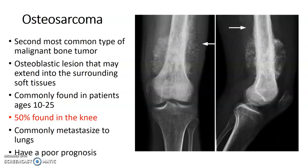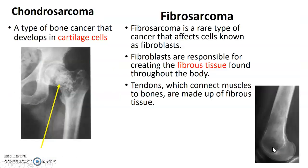Osteosarcoma — 50% are found in the knee. It is most commonly found in patients ages 10 to 25 and is the second most common type of malignant bone tumor. Chondrosarcoma develops in the cartilage cells, and fibrosarcoma develops in fibrous tissue — fibro means fibrous, chondro means cartilage.